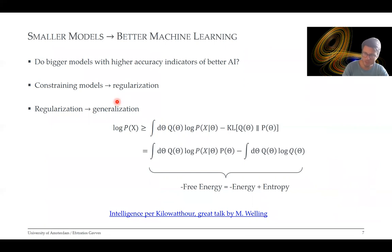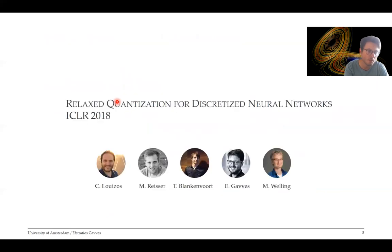However, this is not the only reason. There are also theoretical reasons that perhaps imply that smaller models lead to better machine learning. Do bigger models with higher accuracy indicate better AI? That's a very good question. Constraining models means regularizing, and regularizing means better generalization. So by forcing our models to not devour too much of their energy resource or their bits, we might actually get even more accurate or more robust performances in the end.